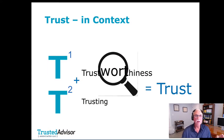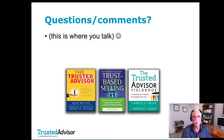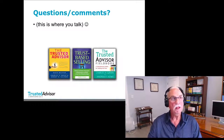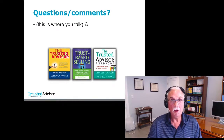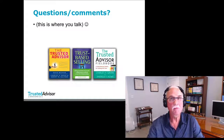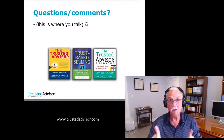Let me put trust in context: we're talking about trustworthiness and trusting — the combination of which results in trust. Now for some questions. Where does consistency fit in the trust equation? It fits in reliability in exactly the way you'd think. But it also shows up at a broader level — there is a sense of consistency across all four components. Statistically, people with a lower standard deviation between their four scores tend to score higher overall.